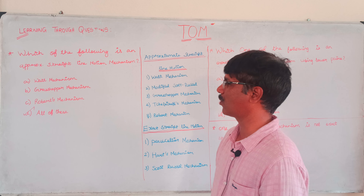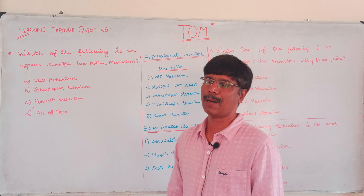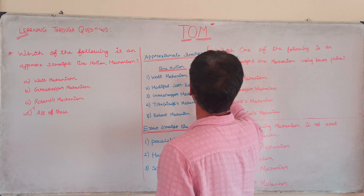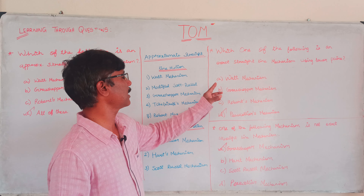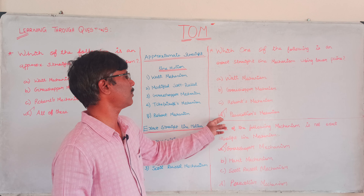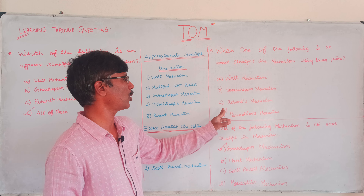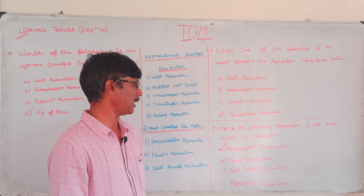What mechanism? The ROBERTS mechanism is an approximate straight-line mechanism. The PEAUCELLIER mechanism — LOCK — Option D.